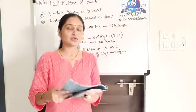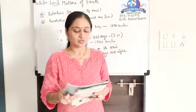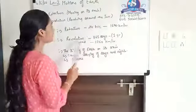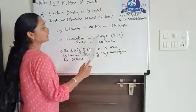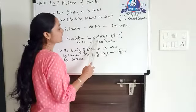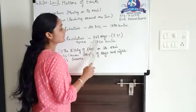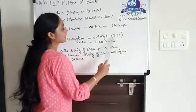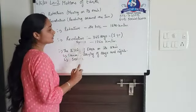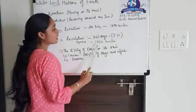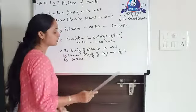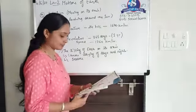In the same way, revolution — earth takes 365 days to complete one revolution around the sun, that is 1 year. Its speed is 1760 km per hour.